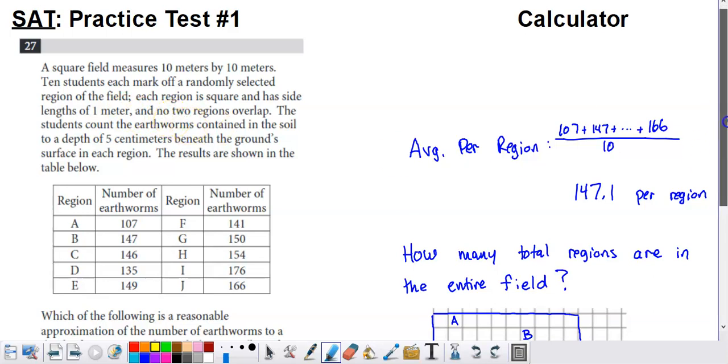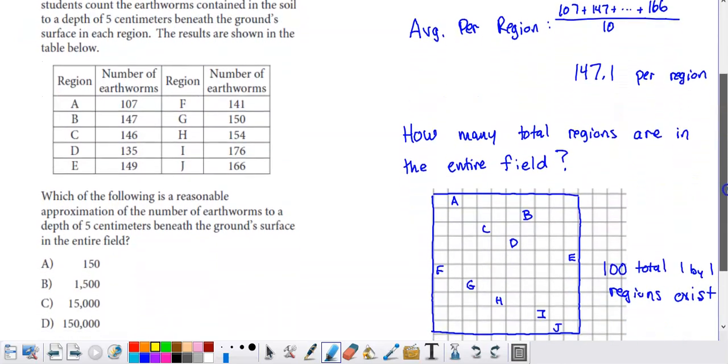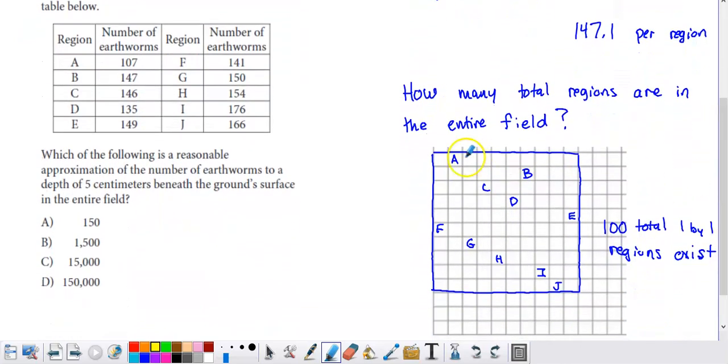So I guess I'm kind of going out of order here, but I want to show you what the field looks like. So I got a little piece of graph paper. If you count across here, you're going to see 10 units. If you count down this direction, you're also going to see 10 units. And what I have is I have these 10 little regions, they're labeled with letters A through J.